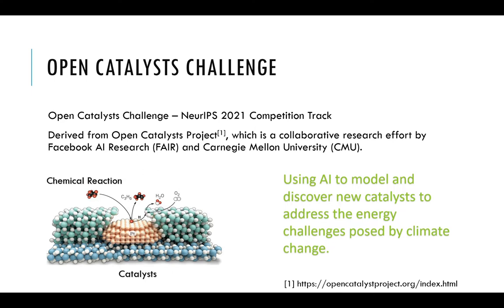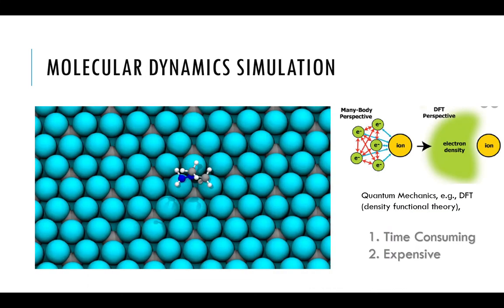It aims to use AI to model and discover new catalysts to address the energy challenges posed by climate change. If we could find a kind of catalyst which can drive the chemical reaction of conversion of renewable energy to other fuels, such as hydrogen, then it offers the potential of scaling to nation-sized grids for renewable energy storage to address the global warming issue.